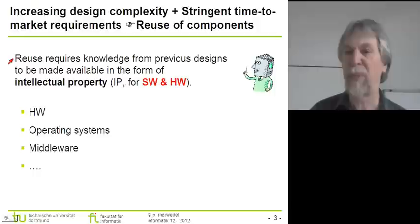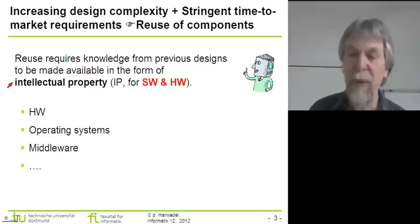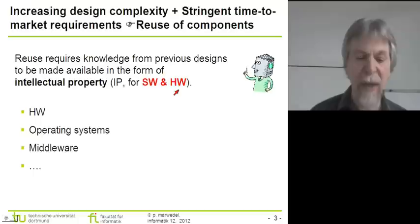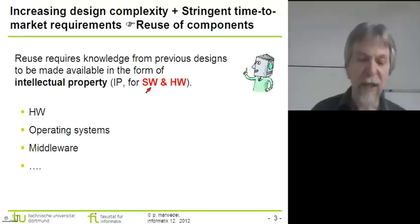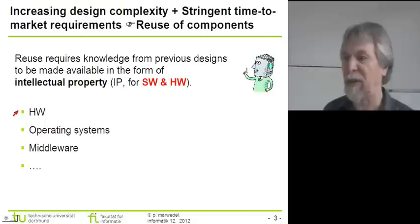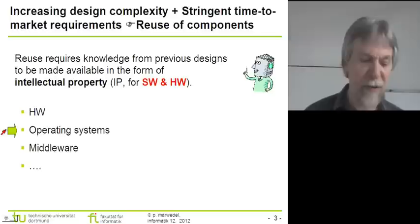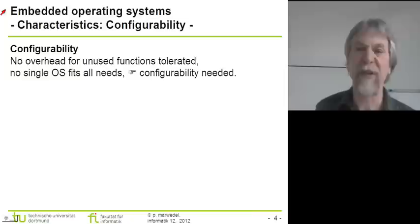The key answer to these two conflicting requirements is the reuse of components. Without reuse there is no hope that we can design these increasingly complex systems in the time available. Reuse means we have to reuse knowledge from previous designs, made available in the form of so-called intellectual property or IP. Many people associate IP with hardware, but we also have to think of software, since software design takes a very long time. We did already look at hardware IP in chapter three, and today I start the discussion of software IP, in particular embedded operating systems.